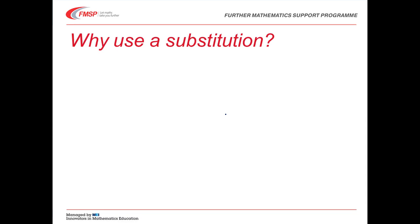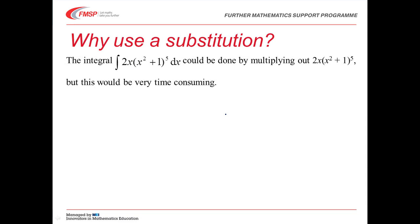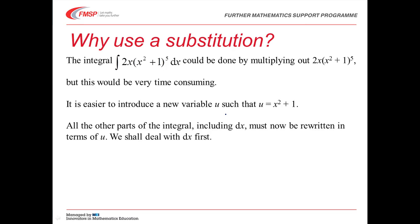The first question is: why might we want to use a substitution to integrate? Here's an example to show. We could do this integral just by multiplying everything out, but that will be quite time consuming. There's a much quicker way. We're going to replace x squared plus 1 with a new variable u. That means we need to replace everything else in the integral in terms of u — and that includes the dx. We'll deal with that first because that's the most complicated bit of this method.